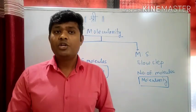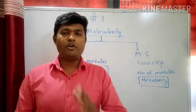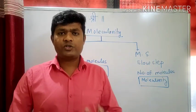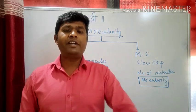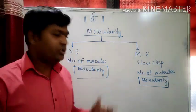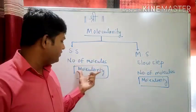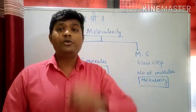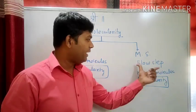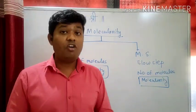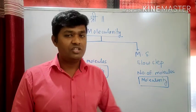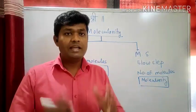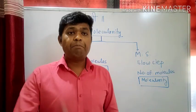Friends, again I am repeating. To predict the molecularity clearly, first of all you have to predict whether the reaction is a single step or a multi-step reaction. For a single step reaction, the number of molecules involved in that reaction will be the molecularity. For a multi-step reaction, first of all you have to predict which is the slow step. And by looking at the number of molecules involved in that slow step, that will be the molecularity of the reaction. Let us simplify the concept by taking proper examples.